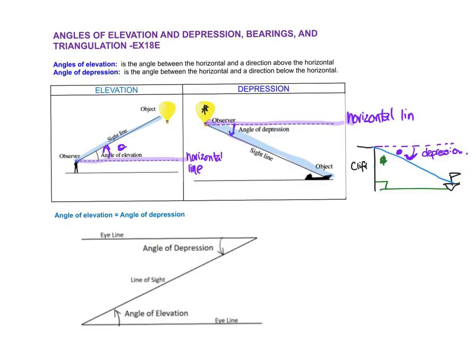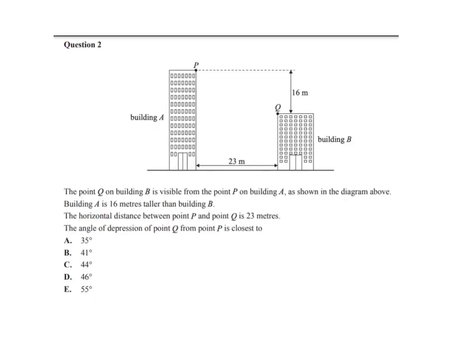The angle of depression is equal to the angle of elevation — that's a rule we can use. When they give it to you and you're trying to set up, they might say the boat is 200 meters from the cliff, then ask for the height of the cliff. So we're setting up a triangle that way. Just be really careful with that.